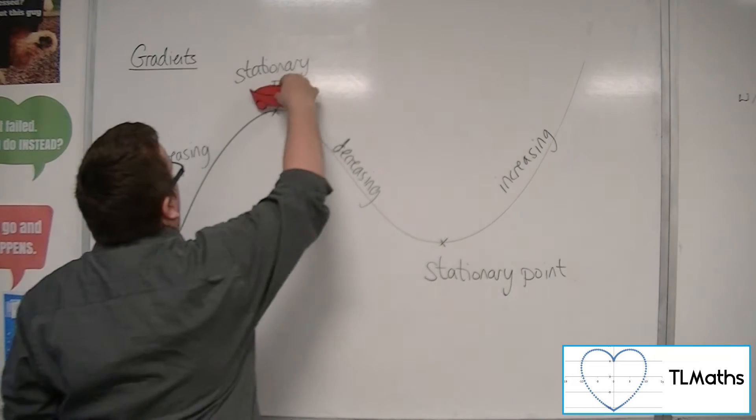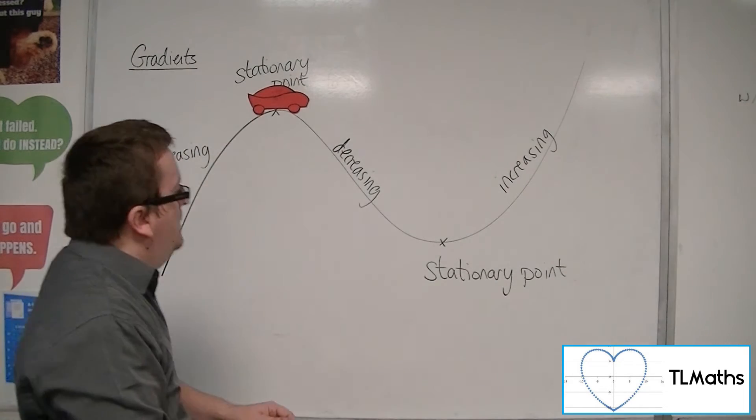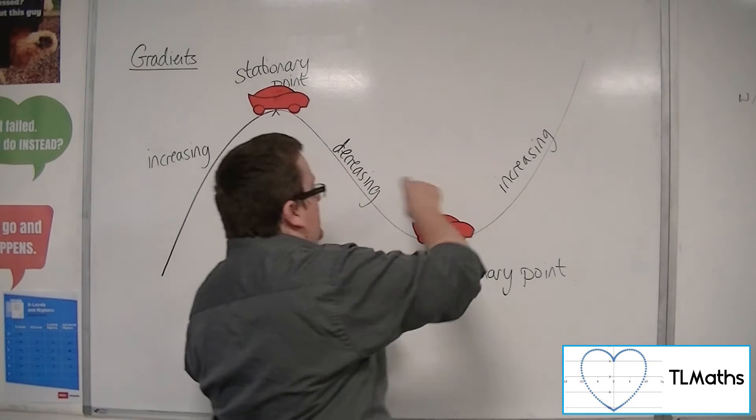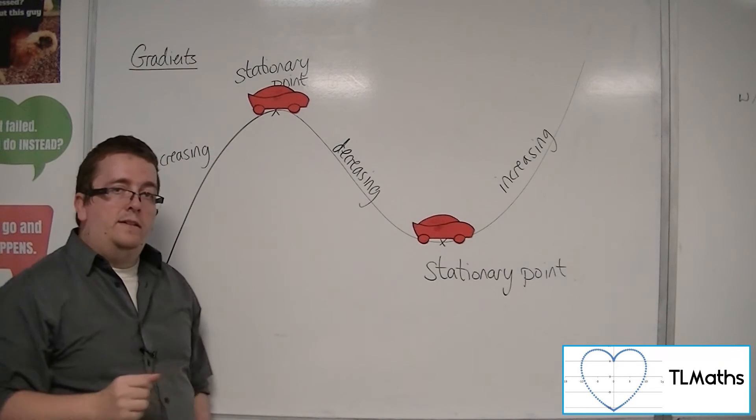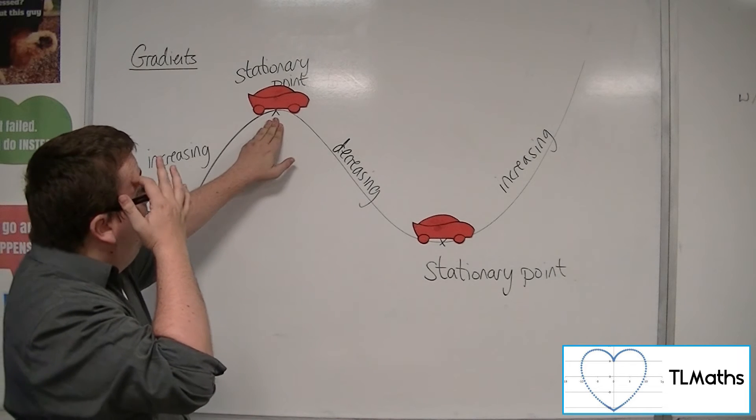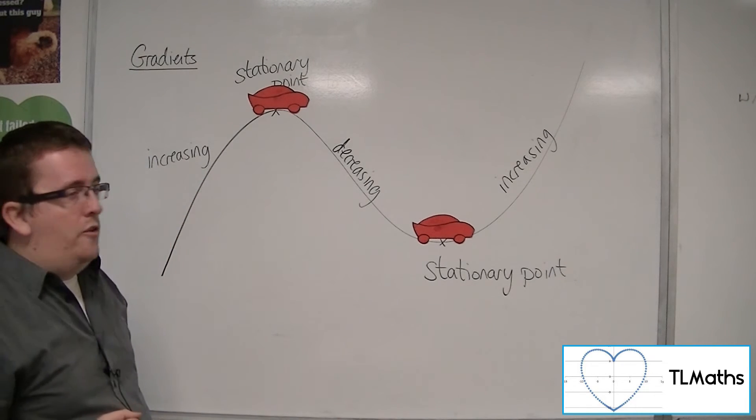Well, you'd have to park it precisely at the top of that hill there, and you'd have to park your car precisely at the bottom of that hill there. Because if you park it right on the top there, not an inch either side, it will stay where it is.